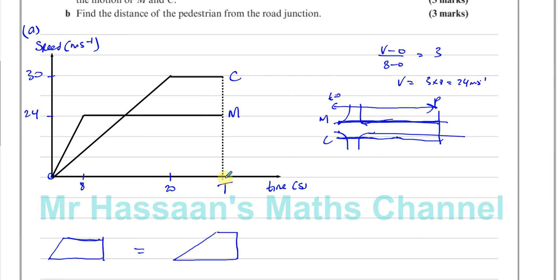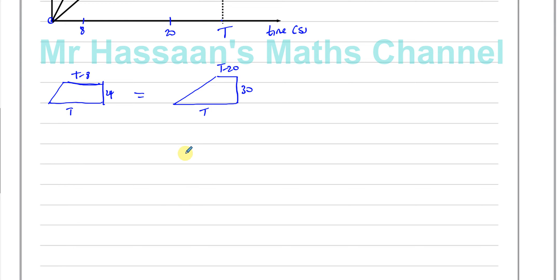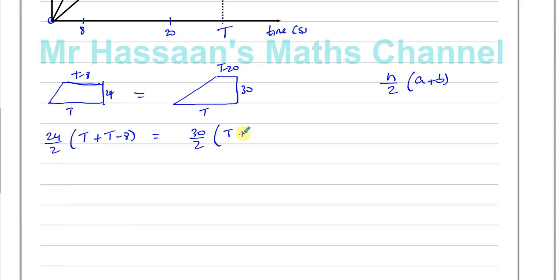For the car trapezium: the parallel sides span from 0 to 30 m/s in speed, the full base is t, and the top is t minus 20 (since acceleration ends at 20 s). For the motorcycle trapezium: the parallel sides span 0 to 24 m/s, the base is t, and the top is t minus 8 (since acceleration ends at 8 s). Setting the two trapezium areas equal: (24/2)(t + t − 8) = (30/2)(t + t − 20).